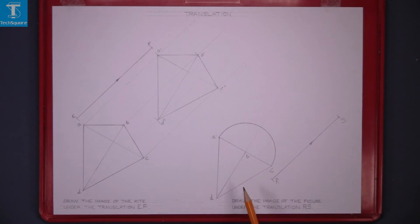The second question here is draw the image of the figure which has a circle in it under translation RS.